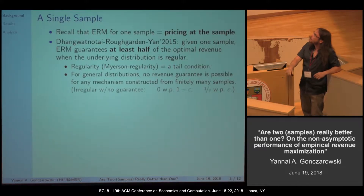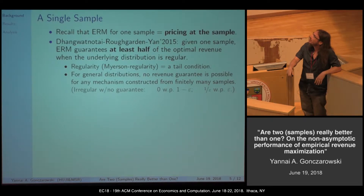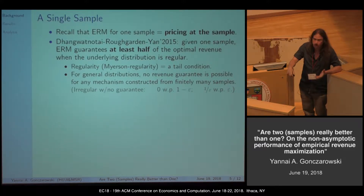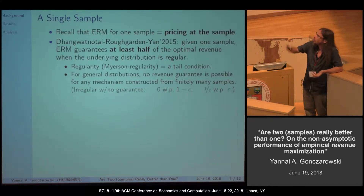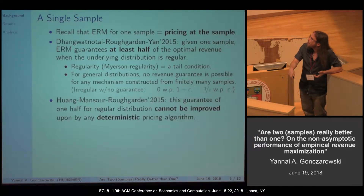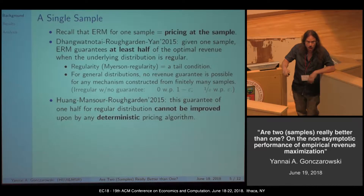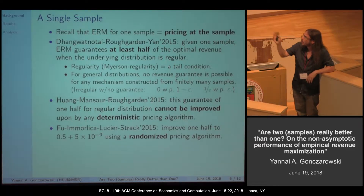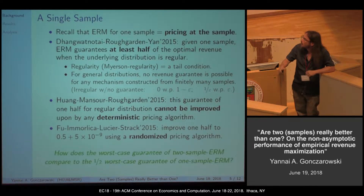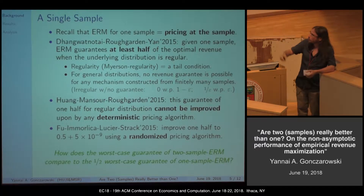Let's recap what's known about a single sample. ERM for a single sample is just pricing at the sample. Devanur, Thai, Roughgarden, and Yan (2015) showed that given one sample, ERM already guarantees at least half of the optimal revenue when the underlying distribution is regular — where Myerson regularity is a tail condition without which we can't give any guarantee for general distributions. Wang, Mansour, and Roughgarden showed this guarantee of one-half for regular distributions is tight — it cannot be improved by any deterministic pricing algorithm. And a surprising result by Fu, Immorlica, Lucier, and Strack showed they could slightly improve one-half using a randomized pricing algorithm. Our main question is how the worst-case guarantee of two-sample ERM compares to this one-half worst-case guarantee of one-sample ERM.